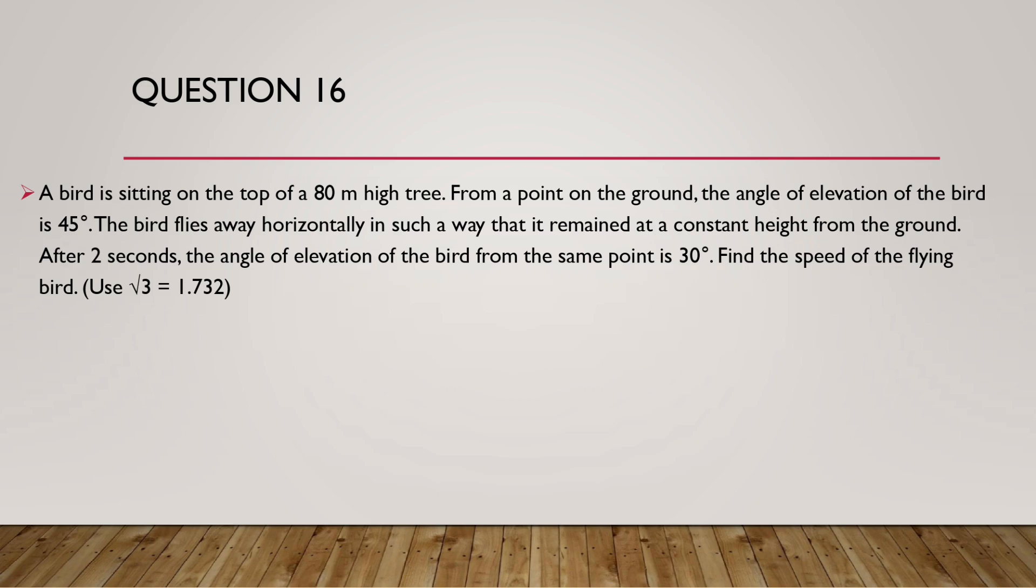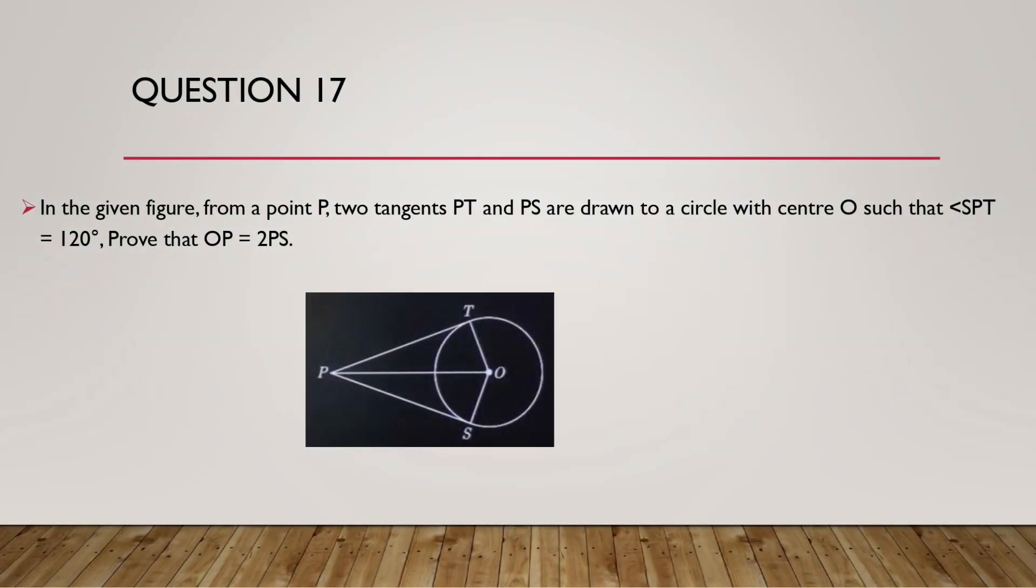Question 16. A bird is sitting on top of an 80 meter high tree. From a point on the ground, the angle of elevation of the bird is 45 degrees. The bird flies away horizontally in such a way that it remains at constant height from the ground. After 2 seconds, the angle of elevation of the bird from the same point is 30 degrees. Find the speed of the flying bird. Use root 3 equals 1.732.